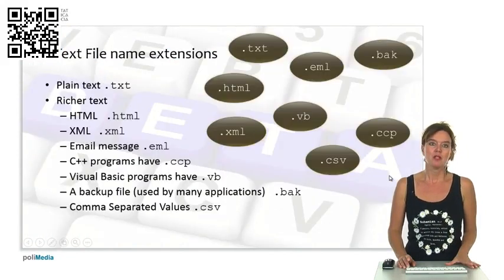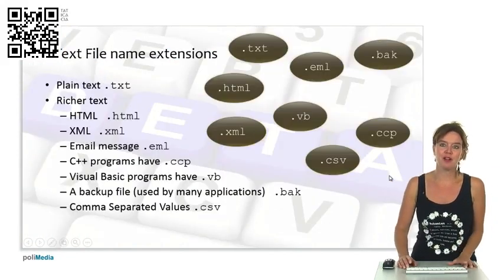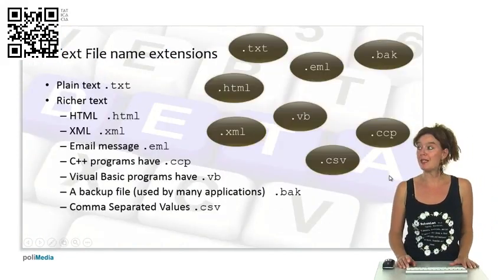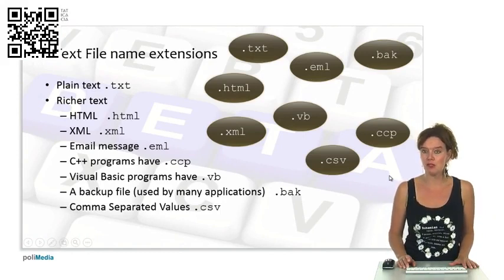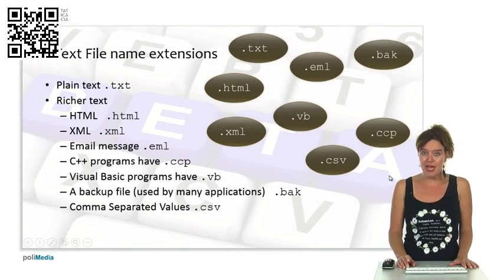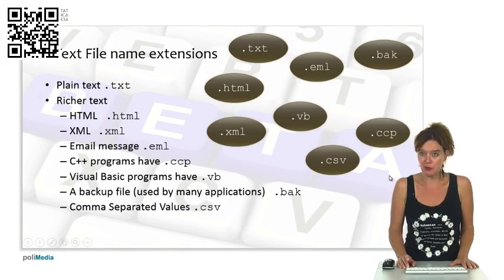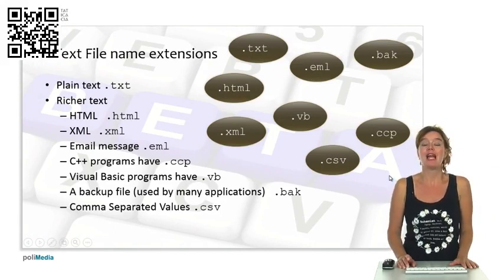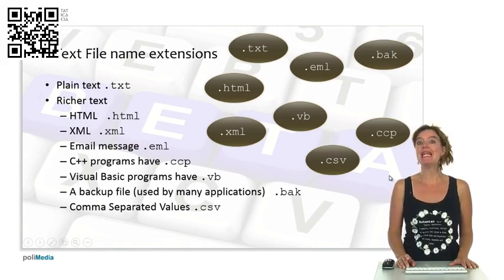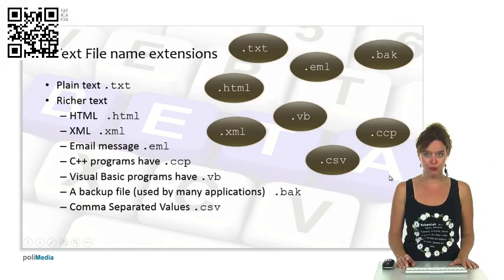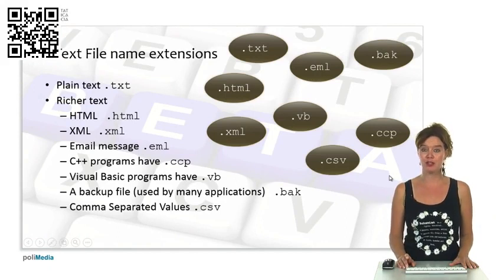Examples of text files and their name extensions: .txt is for plain text. Richer text includes HTML for Hypertext Markup Language, XML for Extended Markup Language, and .eml which is used for email messages. You can have extension .cpp that is used if you have a C++ program.